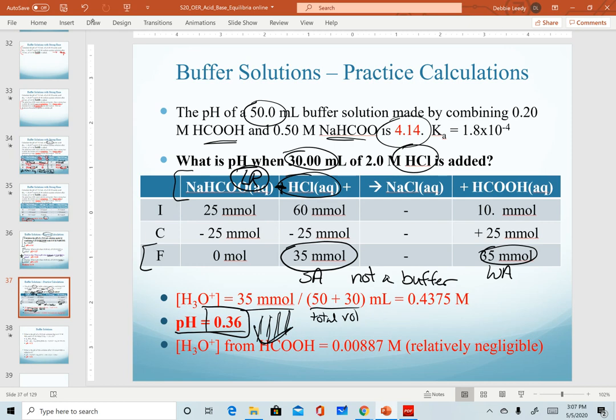Just for the record, if I were to calculate the amount of hydronium from the formic acid, I only get this much concentration, 0.00887 molar. So relatively negligible compared to how much I get from the HCl. Either way, my pH is very low. I no longer have a buffer. And so we have a drastic drop in pH.